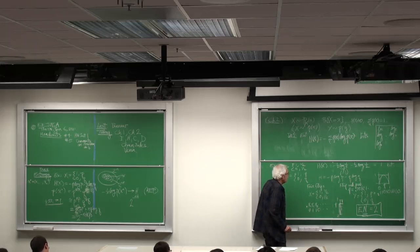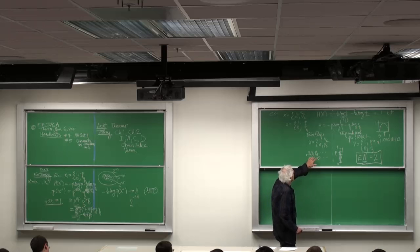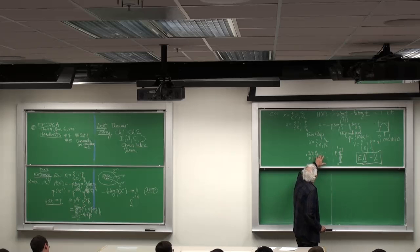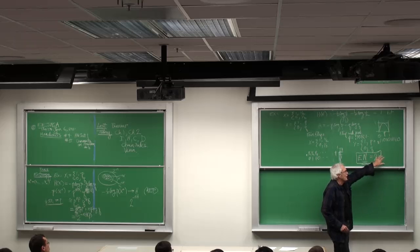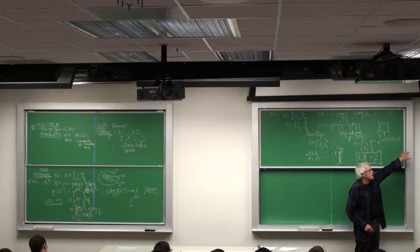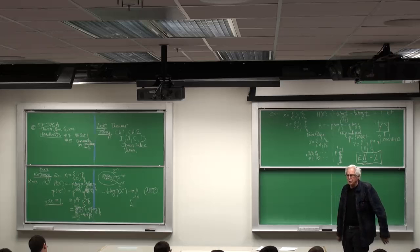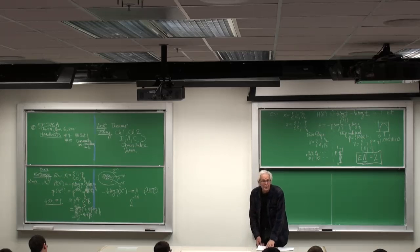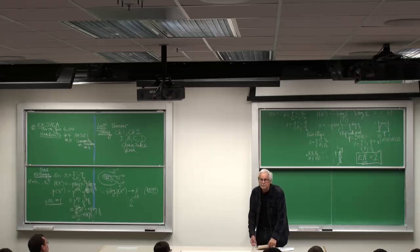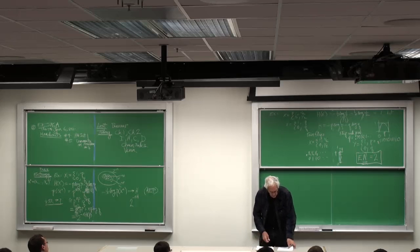The general theorem will be n bits of pure randomness will translate into nH plus or minus 2 bits of the desired randomness that you're trying to create.